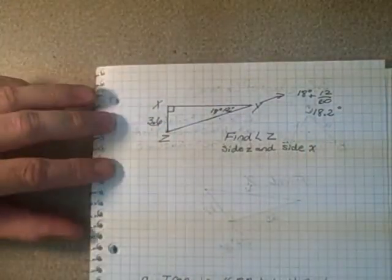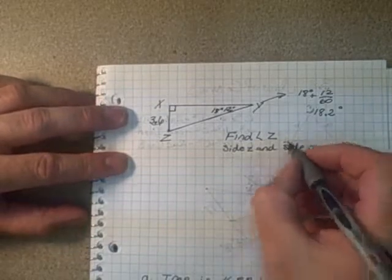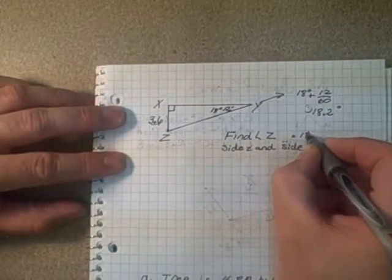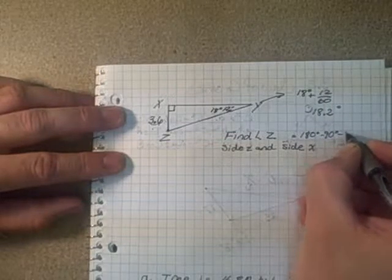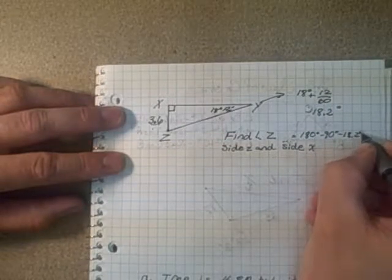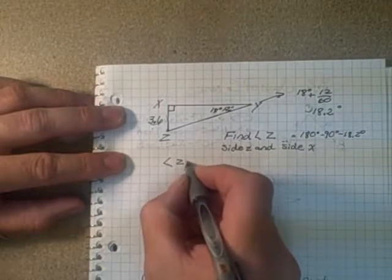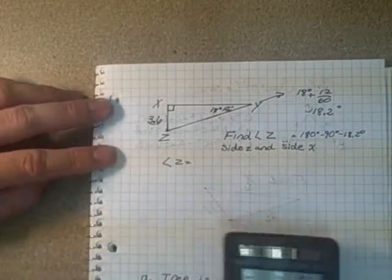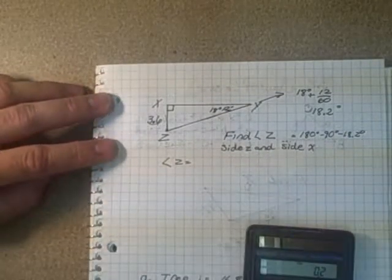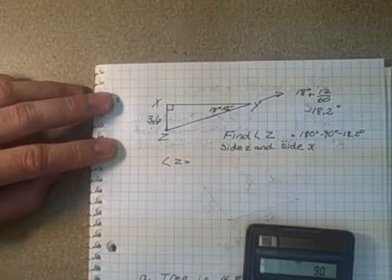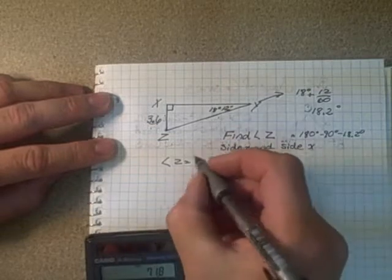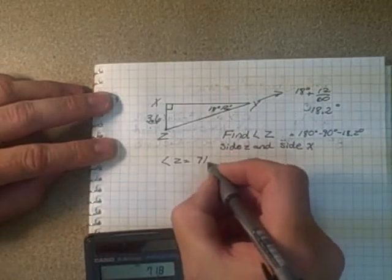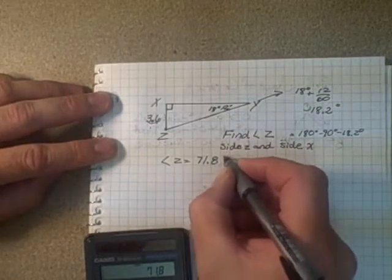So now we can find out what angle Z is by doing what we did earlier. That's going to equal 180 degrees, subtract the 90 degrees, subtract 18.2 degrees. So angle Z for us is 90 minus 18.2, which equals 71.8 degrees.